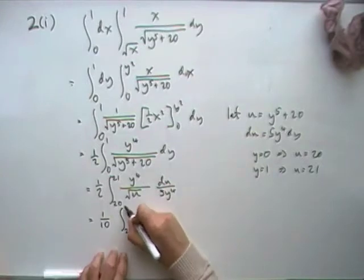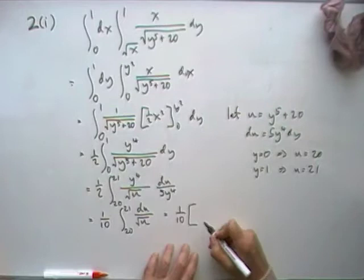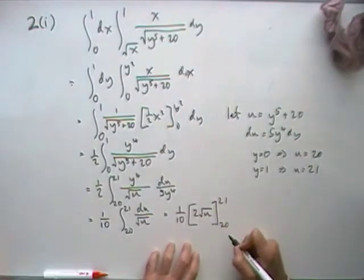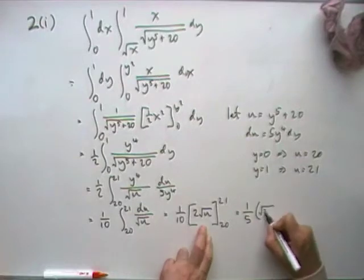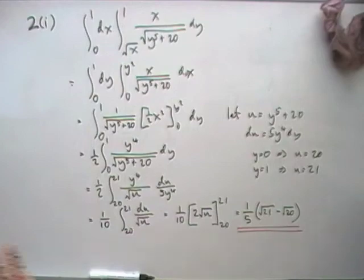Over 5y to the 4th, y to the 4th cancel out. So there's a 10. Put the 10 in properly. Going from 20 to 21, just a du over root u. Now root u underneath will just go back to root u on top with the half, of course, dividing to make out of times 2. And then evaluate that twice. So you've got the square root of 21, take the square root of 20. Done.